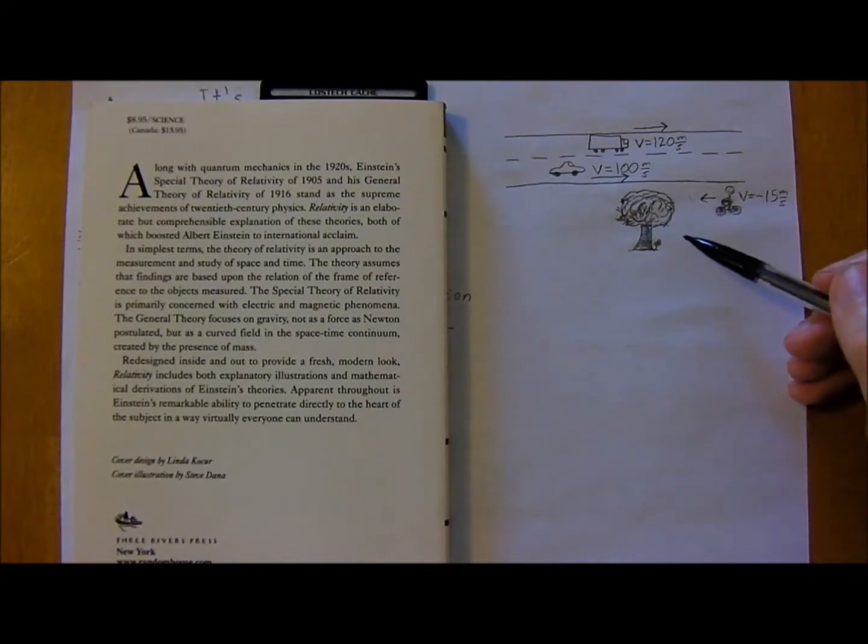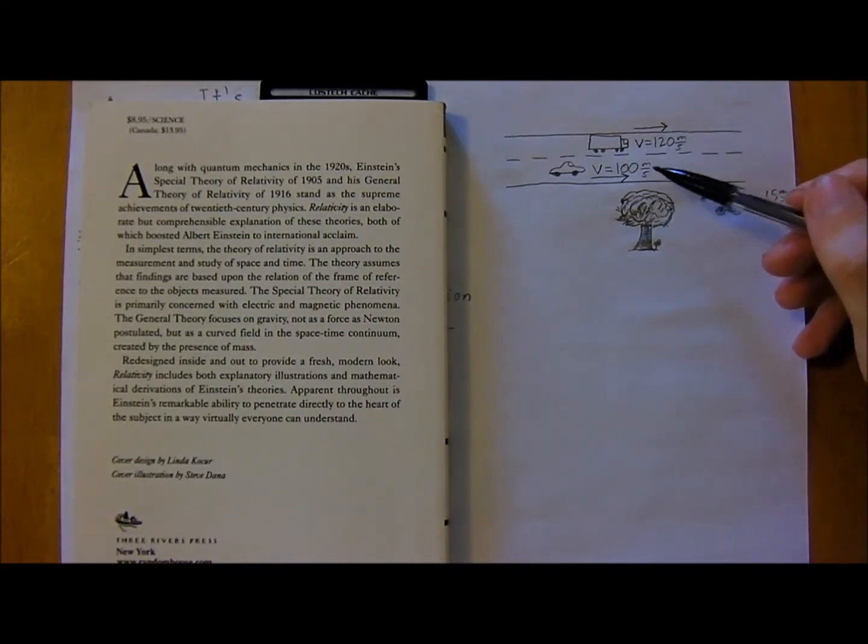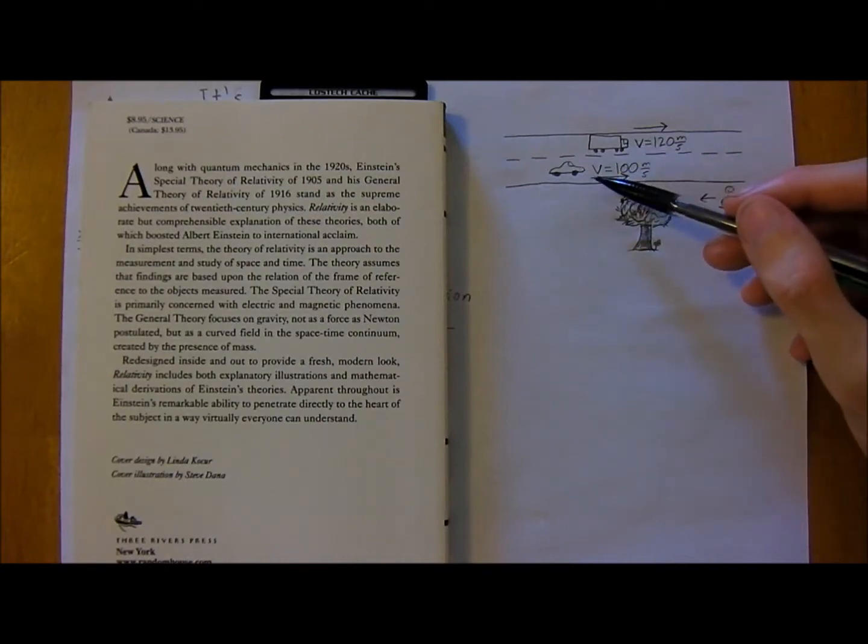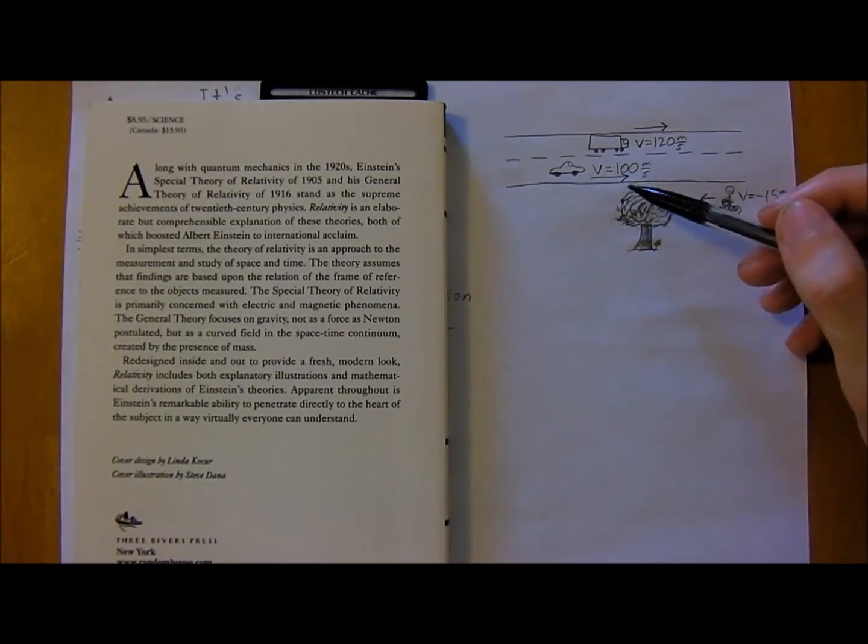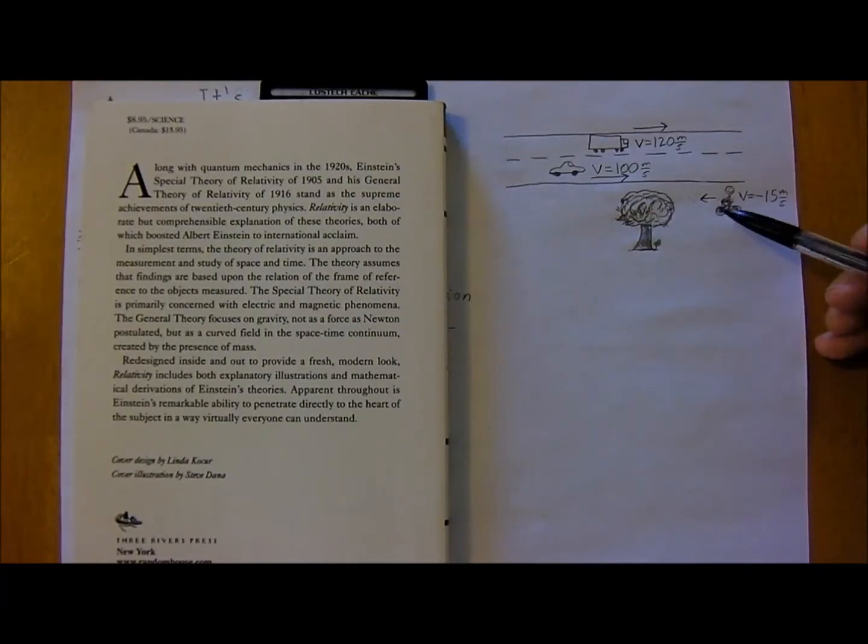But let's just complete it now. So let's look at it from the trucker's point of view. And the car is moving at negative 20 meters per second and the biker, if you're sitting there at rest, is going at negative 135 meters per second. And so this is just a really good way to start visualizing it.